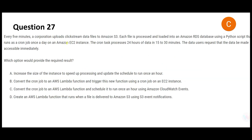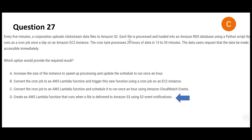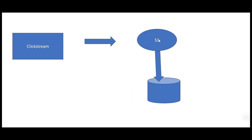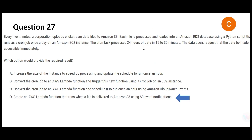Now let's jump to the next question. A corporation has data files from a clickstream being sent to S3. After S3, each file is processed and loaded into an RDS database. This copy is done by Python scripts running on EC2 instances. The problem is it takes approximately 15 to 30 minutes to process 24 hours of data. The issue is it's slow — they need performance and access immediately.